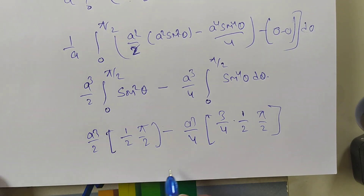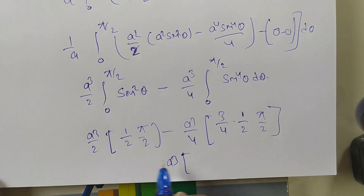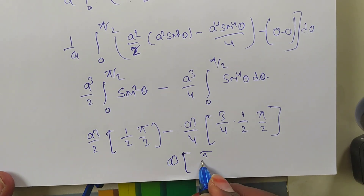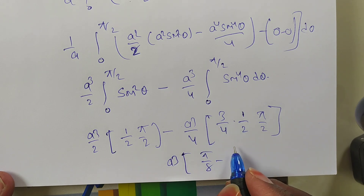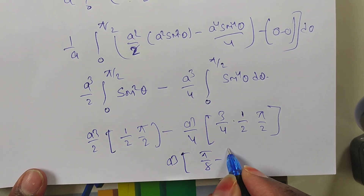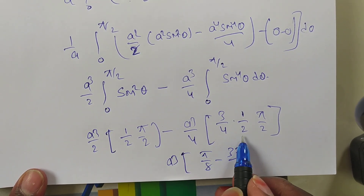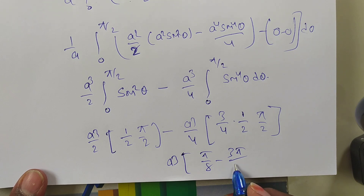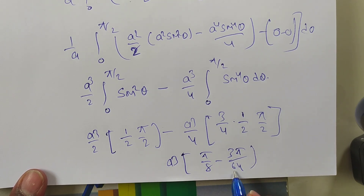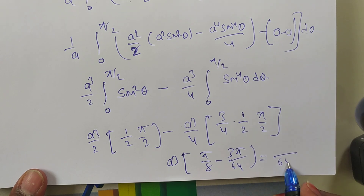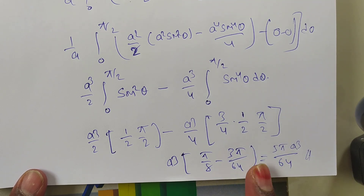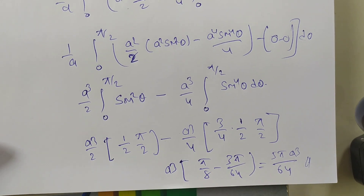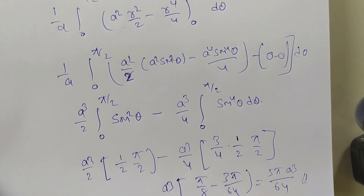Taking a³ as common factor, we have a³ times (π/8 − 3π/64). Using LCM of 64: 8π/64 − 3π/64 = 5π/64. Therefore the final answer is 5πa³/64.